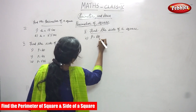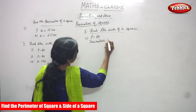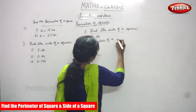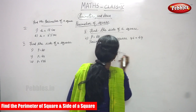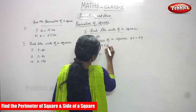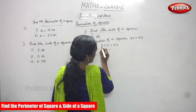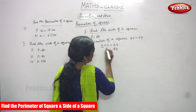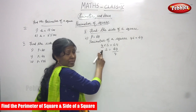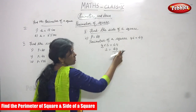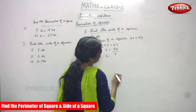Next sum. P is equal to 64. P means perimeter of a square. Perimeter of a square is equal to 4S is equal to 64. That means 4 into S equals 64. You have to find the side of a square. This 4 is in the multiplication place, so it goes to the opposite direction — it becomes division. The side is equal to 64 divided by 4.